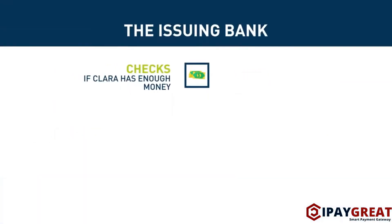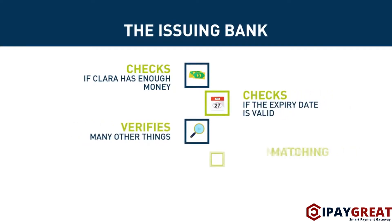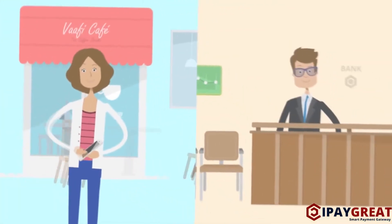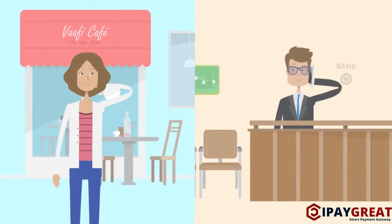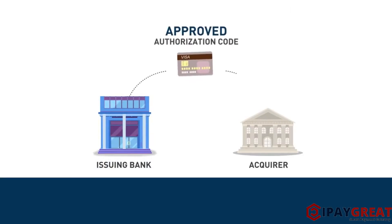The issuing bank checks if Clara has enough money, checks if the expiry date is valid, and verifies many other things, including matching Bob's business address and the cardholder's billing address. That's why you always need to call your bank if you travel abroad and would like to use your credit card in a different country. Once the issuing bank confirms that everything is correct, it issues an approved authorization code and sends it back the same way it received the authorization request, through Visa and the acquirer.